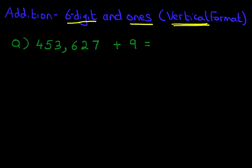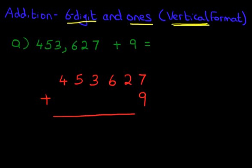So the first step is to rewrite the question from the horizontal format into the vertical format. So let's do that over here. 453,627 plus 9. Nice big equal sign.